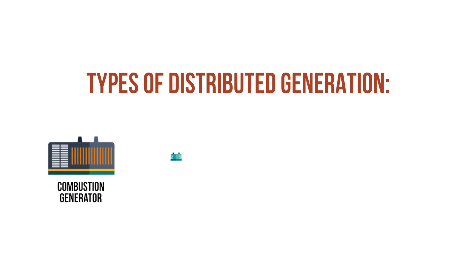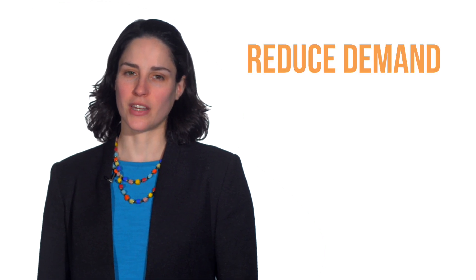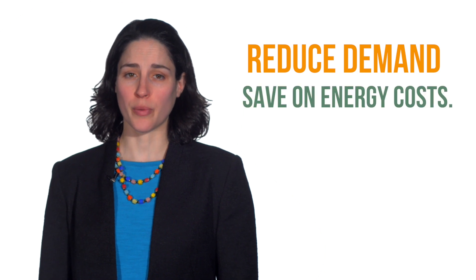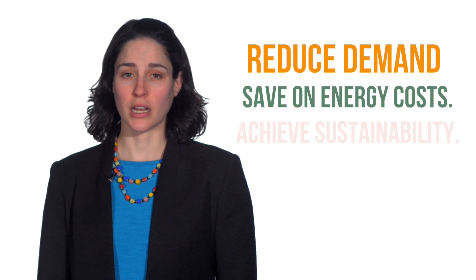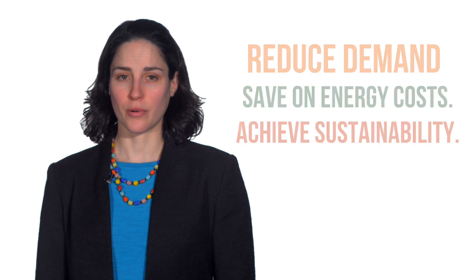There are several types of distributed generation systems, including combustion generators, fuel cells, solar systems, wind systems, hydro systems, and others. Each type has its advantages and disadvantages, but all help reduce demand required from traditional power generators, which in turn can help you save money while keeping the grid balanced and reliable.